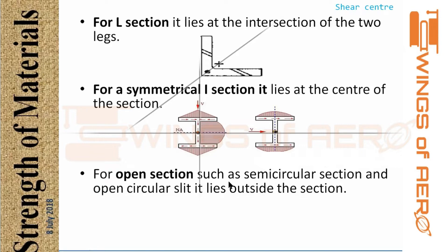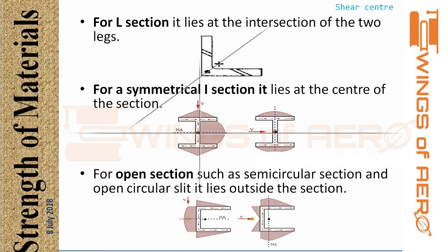For open sections such as a semicircular or channel section, the shear center lies outside the section. In the channel section example, the yellow point represents the shear center lying outside the section, while the black dot represents the centroid. The horizontal axis becomes the line of symmetry, and per our rule, the shear center lies on that line of symmetry.